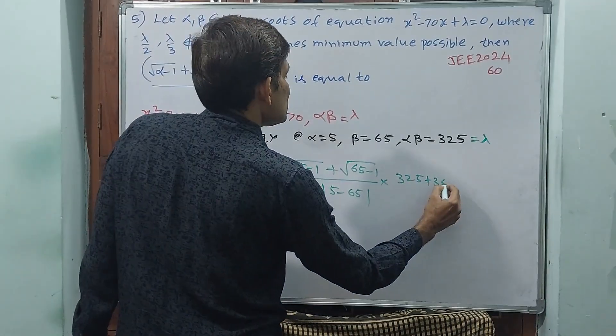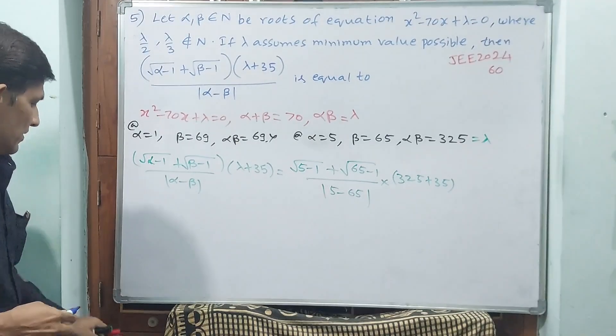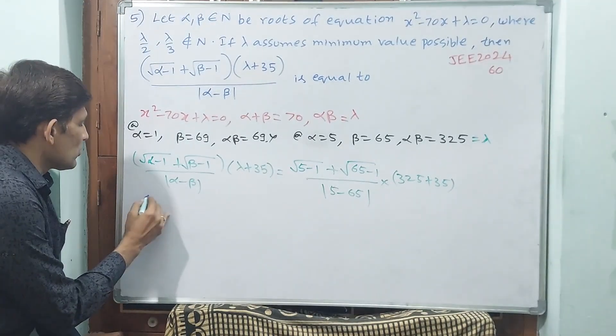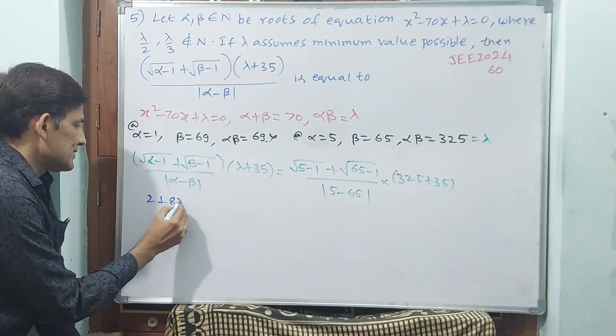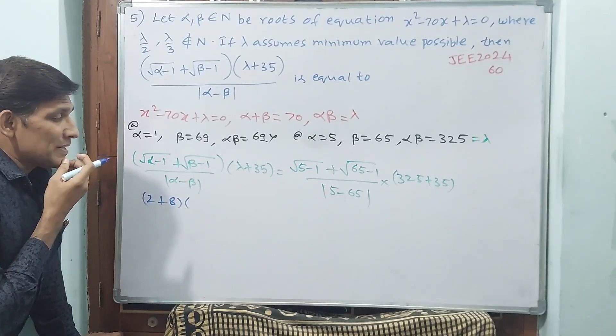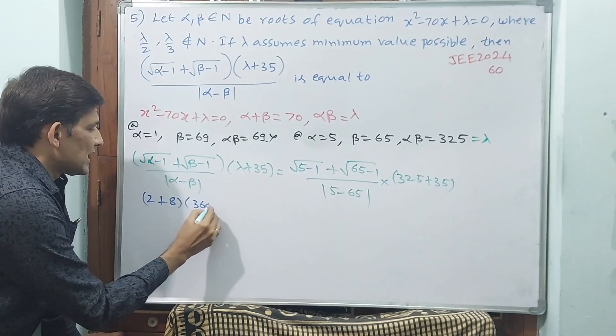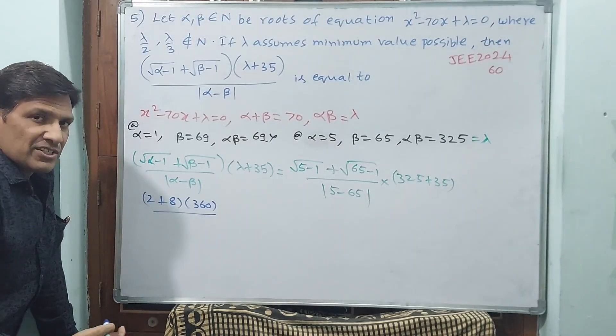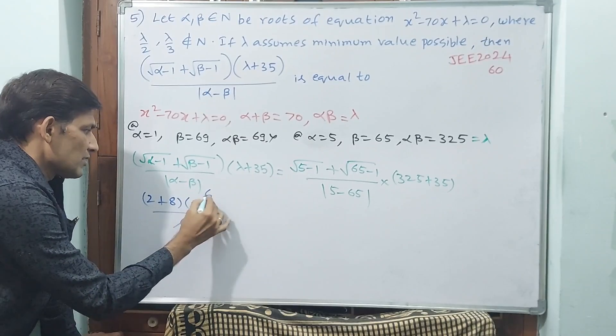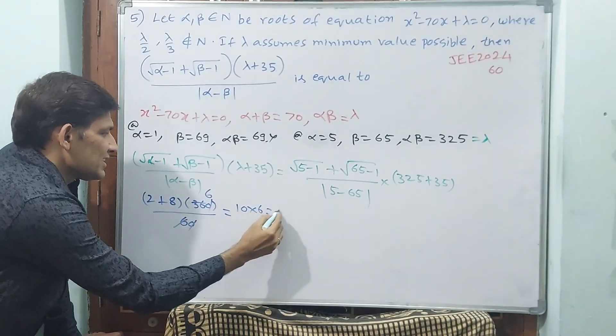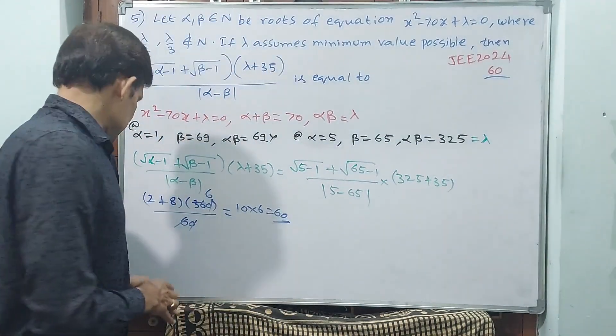Now 5 - 1 is 4, √4 is 2, plus 65 - 1 is 64, √64 is 8. 325 + 5 is 330, plus 30 is 360. 5 - 65 = -60, modulus 60. 8 + 2 = 10, 10 × 6 = 60. 60 will be your answer. Okay, let us open next question.